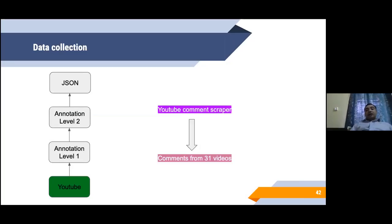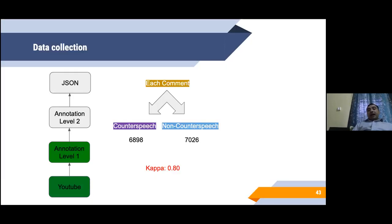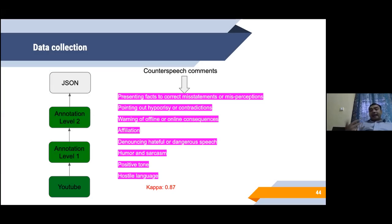We collect the data using the following two-step procedure. We scrape the YouTube comments for the 31 videos. At the first level, we annotate these comments as whether it is counter speech or not. Roughly, we have a total of 14,000 comments and around 7,000 of them are counter speech and 7,000 are non-counter speech. The inter-annotator agreement is around 0.8.